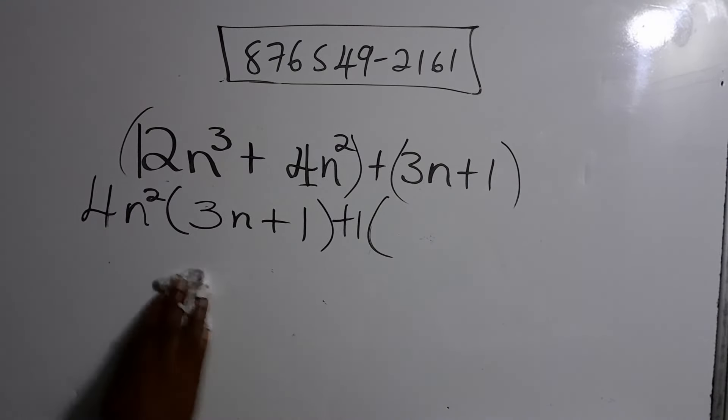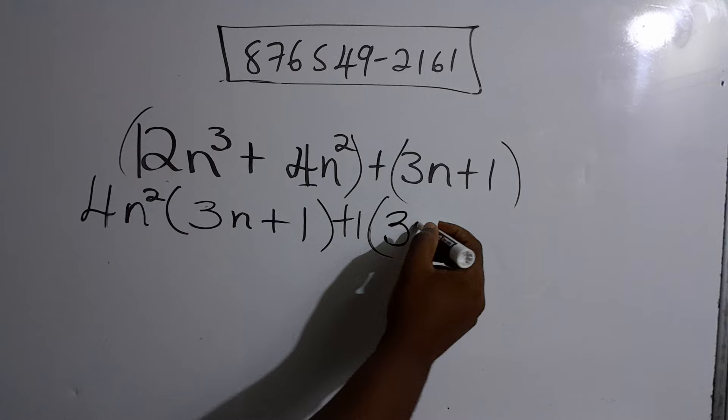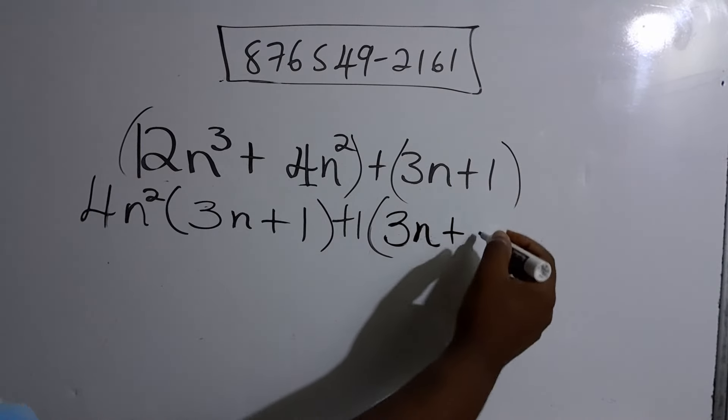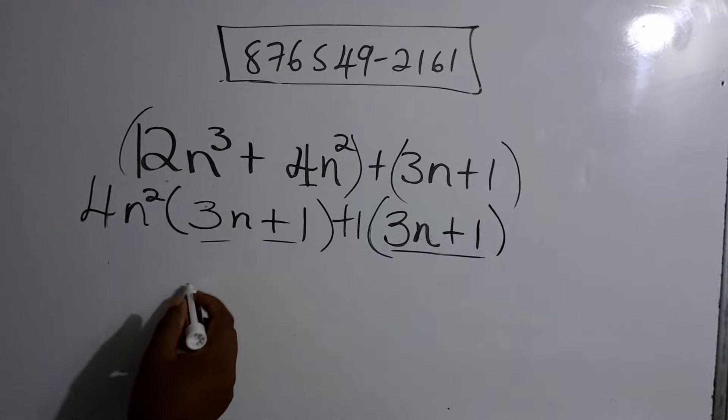And then you say 1 into 3n + 1. Now 1 into any number leaves the number, so 1 into 3n that leaves 3n, and 1 into 1 leaves 1. So there we go, this is common to both, so we pull it out.